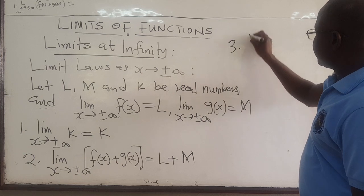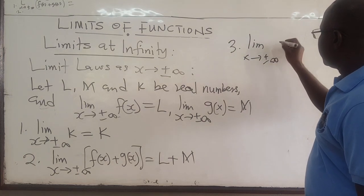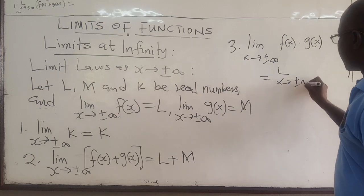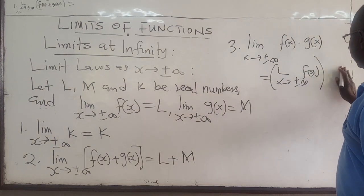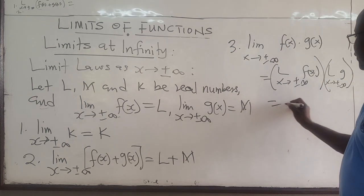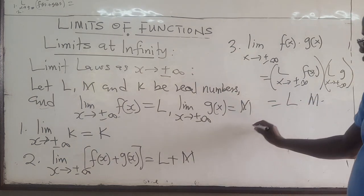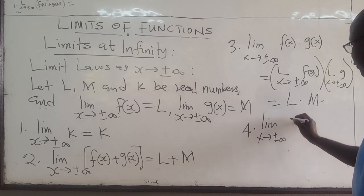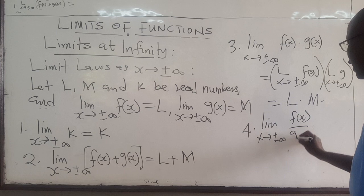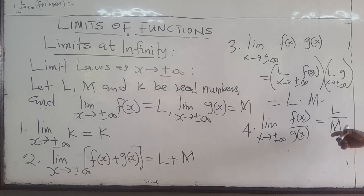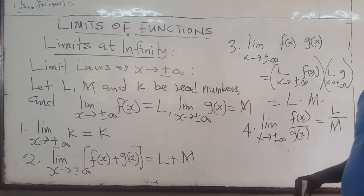And you can do the same for the ratio: the limit as x approaches plus or minus infinity of f(x) over g(x) — take the limit of f(x), which gives you L, and take the limit of g(x), which gives you M. This equals L over M, as long as M is not equal to zero. So you can use this to find the limit at infinity.